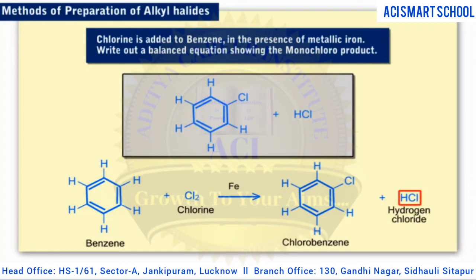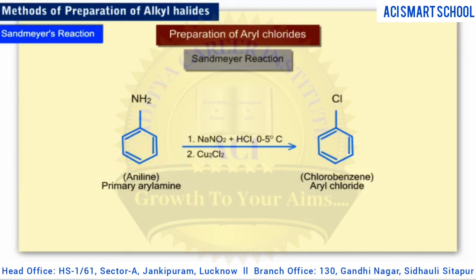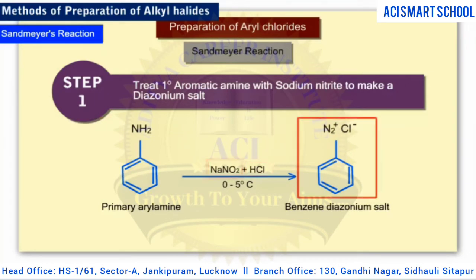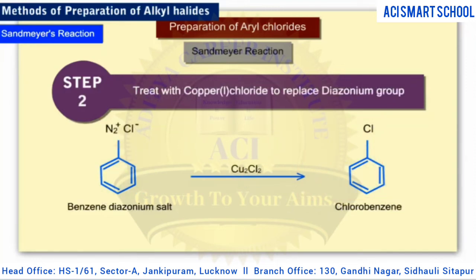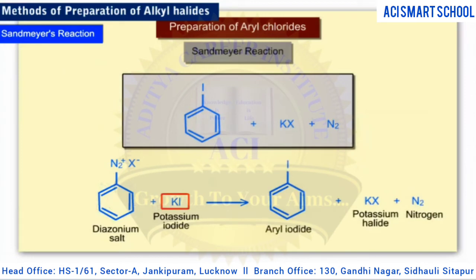The Sandmeyer reaction provides a synthetic route for the preparation of aryl chlorides from primary aryl amines. An amine group is replaced with a chlorine. In the first step, the primary aromatic amine, dissolved or suspended in cold aqueous mineral acid, is treated with sodium nitrite to make a diazonium salt. In the second step, the diazonium salt is treated with copper chloride to replace the diazonium group with a chlorine atom. Alternatively, to make an aryl iodide, the diazonium salt can be treated with potassium iodide.